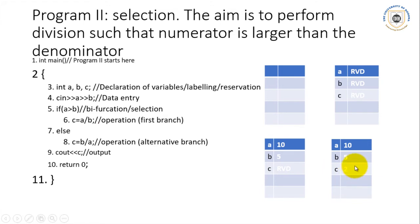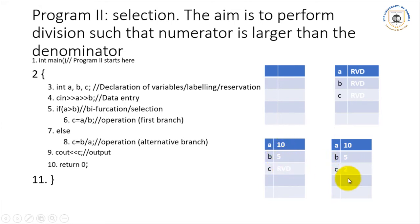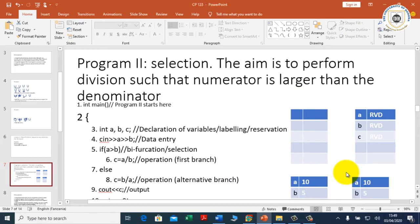In the hypothetical example, if the number in a were smaller than the number in b, then c would get the result of b divided by a instead. But with the data on screen — 10 divided by 5 — the answer is 2, stored in c. That covers the program itself and the RAM diagrams. Now let us go and see how this program runs in the compiler.